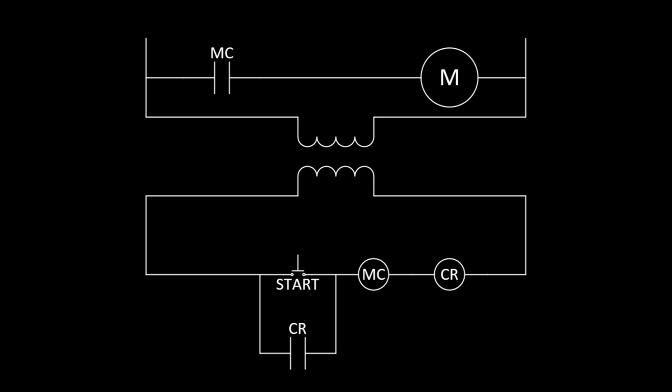The toggle switch has been replaced with a momentary push-button switch, more on that in a moment, but its function is the same. It makes the circuit, providing power to the control relay and main contactor coils, closing both contacts. As before, the main contactor contacts provide power to the motor.